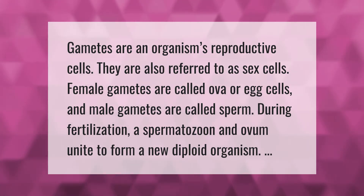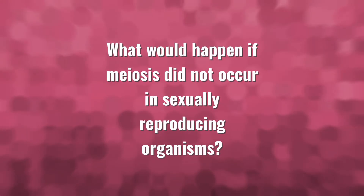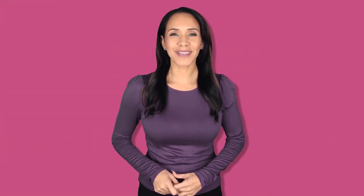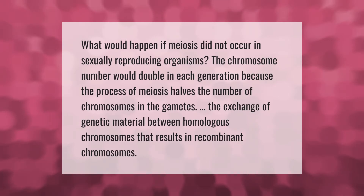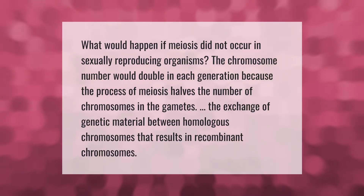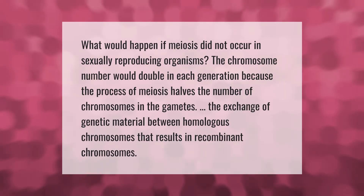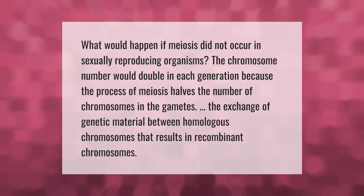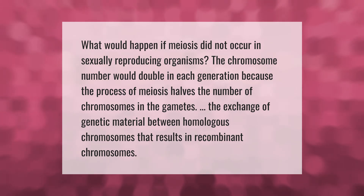What would happen if meiosis did not occur in sexually reproducing organisms? The chromosome number would double in each generation, because the process of meiosis halves the number of chromosomes in the gametes. Meiosis also involves the exchange of genetic material between homologous chromosomes, resulting in recombinant chromosomes.